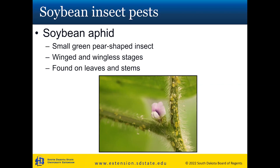Most of us know a lot about soybean aphids — they've been around since 2000, when they were first discovered in the US. Since then they've been one of those pests that initially showed up every year, then for a while seemed to be mainly an issue on odd years. We haven't really seen large populations for some time; however, last year we had hot spots on the eastern side of the state, especially in Brookings County and surrounding areas. We think the pest populations have reached a kind of equilibrium, with natural enemies like lady beetles keeping populations in check.